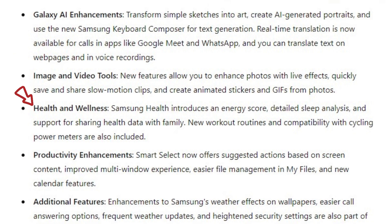You can quickly save and share slow motion clips, and create animated stickers and GIFs from photos. For health and wellness, Samsung Health introduces an energy score, detailed sleep analysis, and support for sharing health data with family. New workout routines and compatibility with cycling power meters are also included.